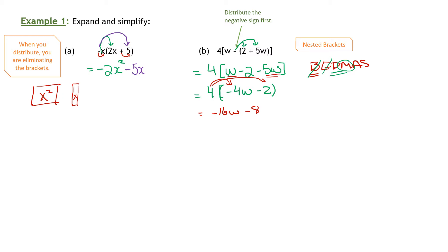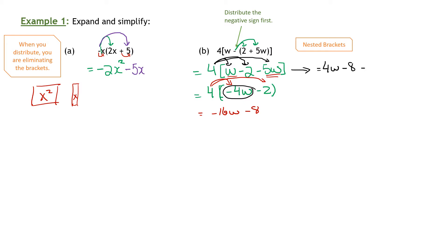I'm just going to show you another way you could have done the question. Let's say you didn't recognize that you could collect those W's inside the bracket — you didn't see that step. What you could have done was distributed the 4 right away and you would have got 4W, 4 times negative 2 is negative 8, and 4 times negative 5W is negative 20W. And now you have like terms: 4W minus 20W gives us the same answer.